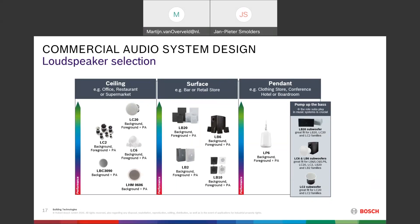In the right column are pendant loudspeakers — useful if you have very high ceilings and don't want to use high-power speakers; by hanging them closer to ear level you can achieve sufficient sound pressure. The LB6, for instance, can be used for this purpose. Also on the right side are subwoofer solutions: if you need a lot of bass — for instance in a retail or clothing store — you can add an LB20 subwoofer, or use the LC6 or LB6 systems with satellites. We also have the LC2 subwoofer, a big subwoofer for this purpose.